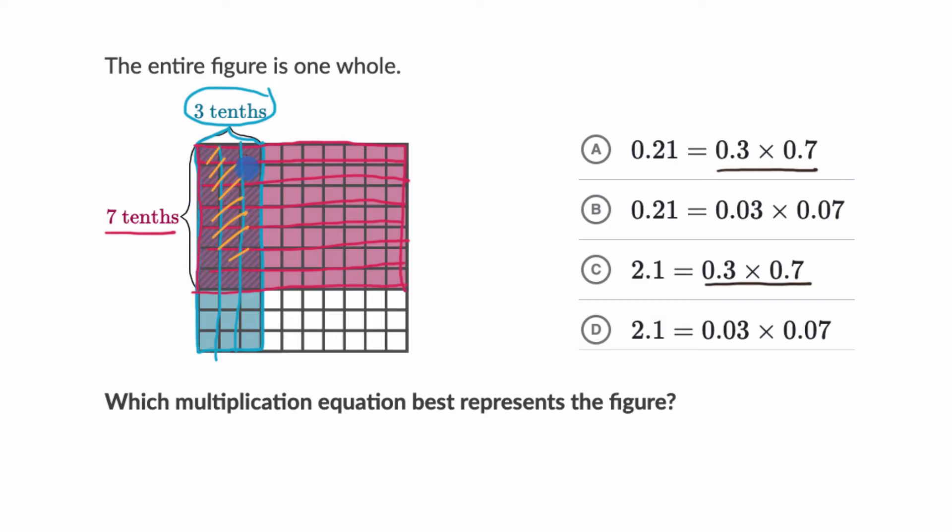Well, when we look at that overlap, we get 21 of these squares because we have seven in this direction, three in this direction. I could count them, but we have 21 squares here. And each of those squares are what fraction of the whole? Well, each of those squares are now one-hundredth of the whole, because this is now a 10 by 10 grid. Each of those is one-hundredth.